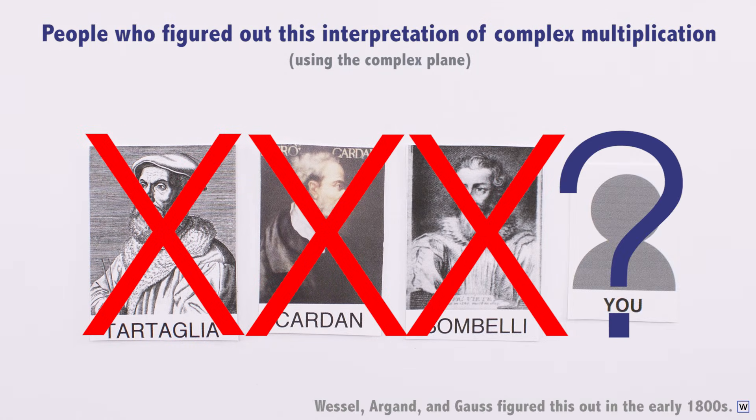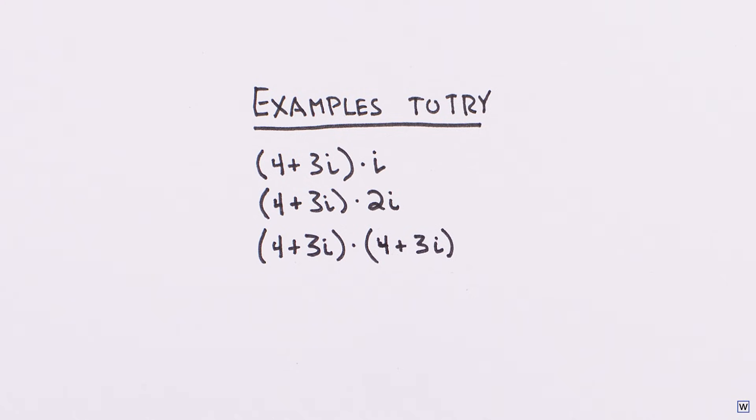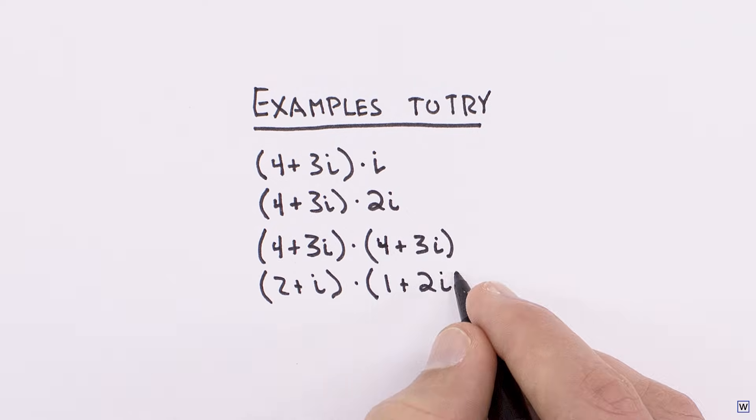Next time we'll uncover this interpretation of complex multiplication using the complex plane, and we're going to do it with four examples: 4 plus 3i times i, 4 plus 3i times 2i, 4 plus 3i times itself, and finally 2 plus i times 1 plus 2i.